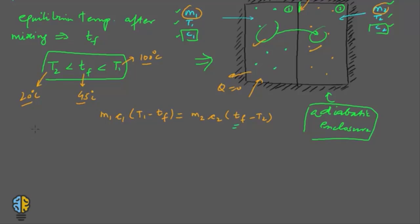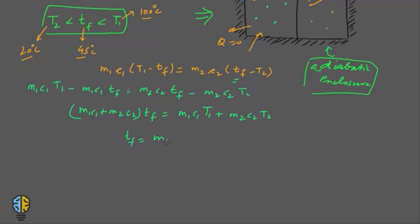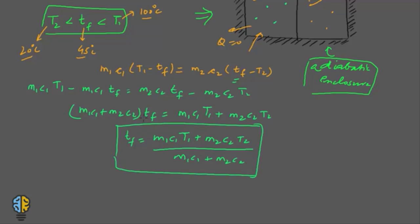Expanding the equation: m1·c1·t1 − m1·c1·Tf = m2·c2·Tf − m2·c2·t2. Collecting Tf terms gives Tf = (m1·c1·t1 + m2·c2·t2) / (m1·c1 + m2·c2). This is the value of Tf obtained by assuming heat lost by fluid one equals heat gained by fluid two.